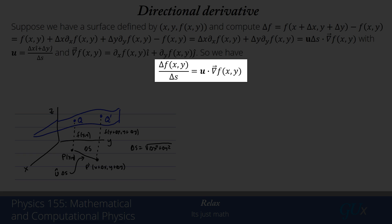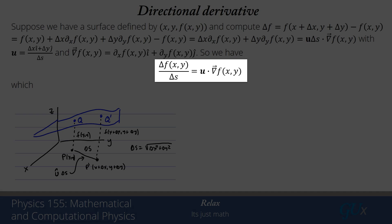Now delta f with respect to delta s, that's kind of like the derivative along a path that has a distance delta s that I've traveled along that path. We're saying that that derivative is equal to this unit vector u dotted into the gradient. This object of u dotted into a gradient is what's called a directional derivative. And this is the derivative of f in the direction given by the path s where I've gone this small distance along the path given by delta s.